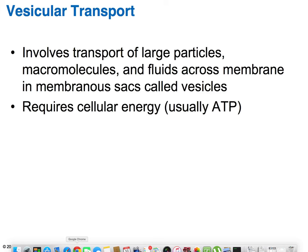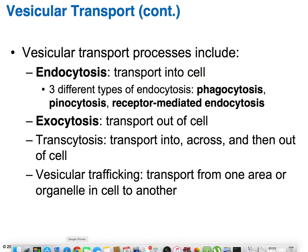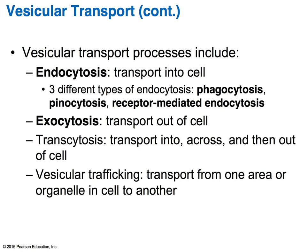Next, we're looking at vesicular transport. Vesicular transport involves the transport of large molecules, large particles, and fluids across membranes in sacs called vesicles. This also requires ATP energy. Vesicular transport processes include endocytosis and exocytosis. Endocytosis brings things into the cell via phagocytosis, pinocytosis, or receptor-mediated endocytosis. Exocytosis transports substances out of the cell. In transcytosis, material is transported into, across, and then out of a cell. Vesicular trafficking moves material from one area of the cell or organelle to another.